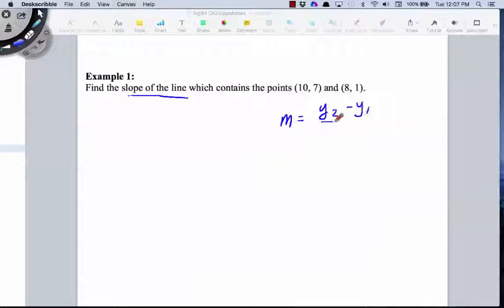Now, remember this y sub 2 and y sub 1, or x sub 2 and x sub 1, just refers to their location. So we can call this x sub 1 and y sub 1, and this one x sub 2 and y sub 2. But it doesn't really matter which one is the first coordinate and which one is the second, as long as you keep them together. So let's calculate this slope both ways.